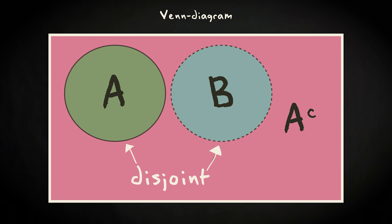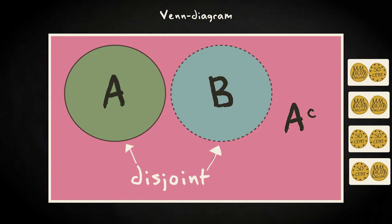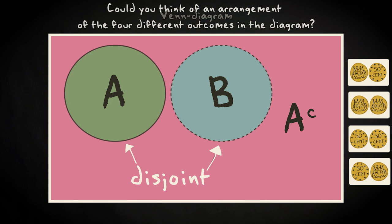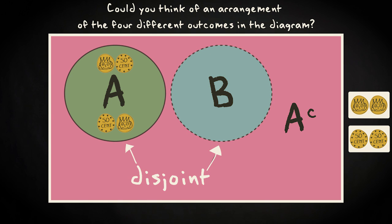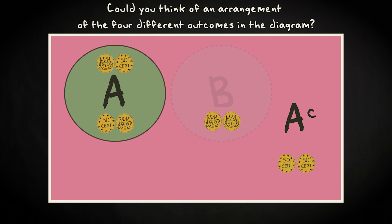If we apply this Venn diagram to the double coin toss, could you think of an arrangement of the four different outcomes in the Venn diagram and describe the events? Having a single heads as outcome could be event A, and having two heads could be event B. The complement of A would then contain both tails tails and heads heads.